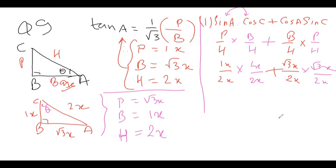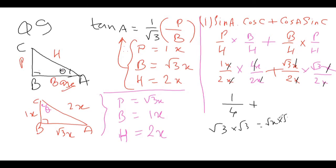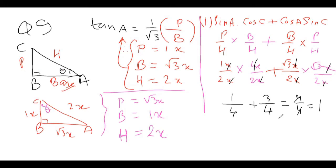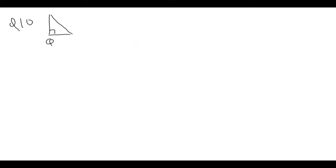Cancelling the x's: (1/2)(1/2) + (√3/2)(√3/2) = 1/4 + 3/4 = 4/4 = 1. Interestingly, both cross-products are equal. These are actually class 11 formulas, but here we're just substituting values — the result is 1.